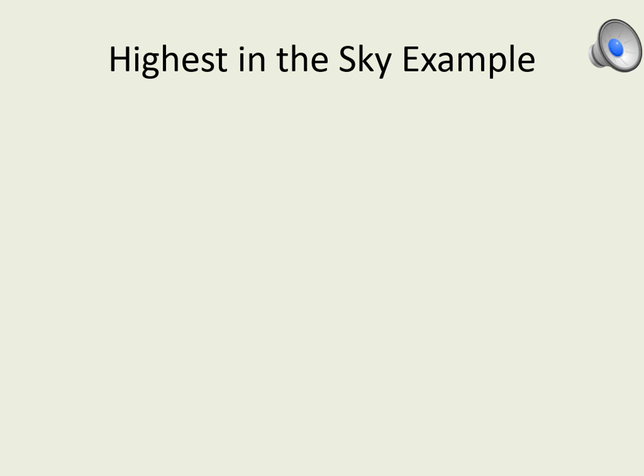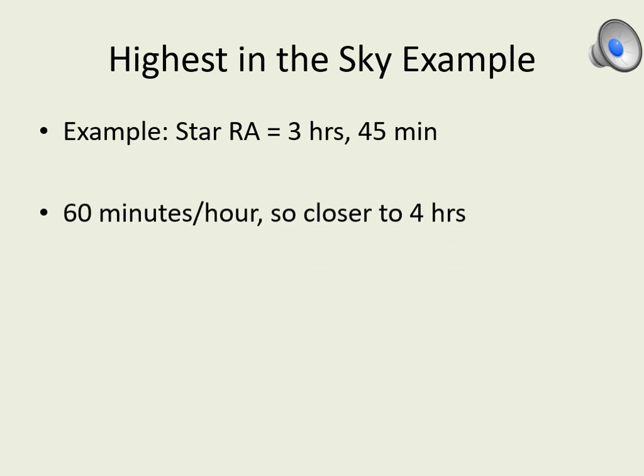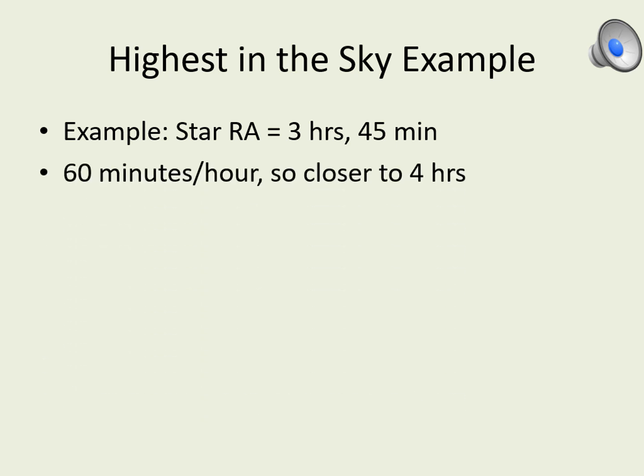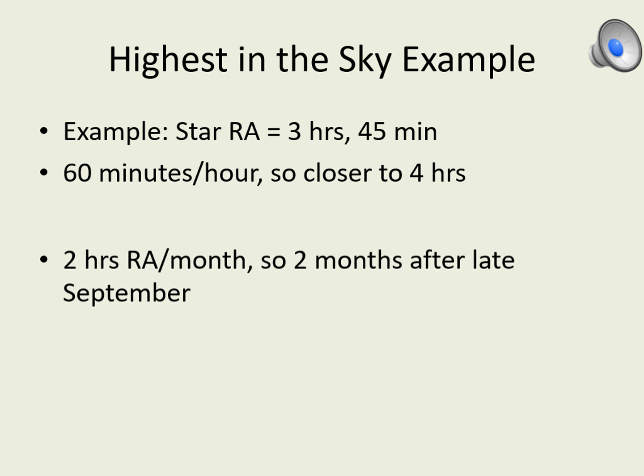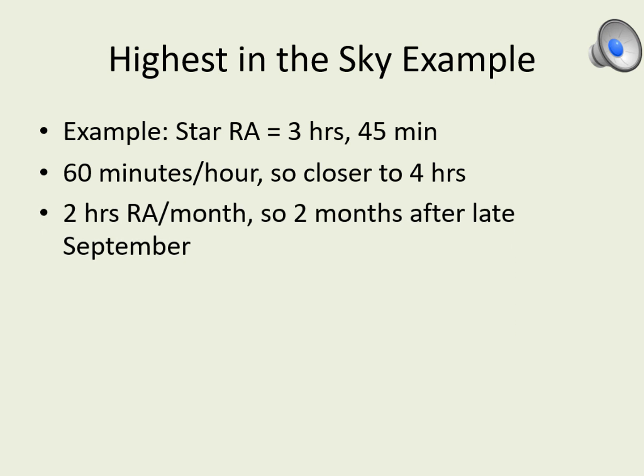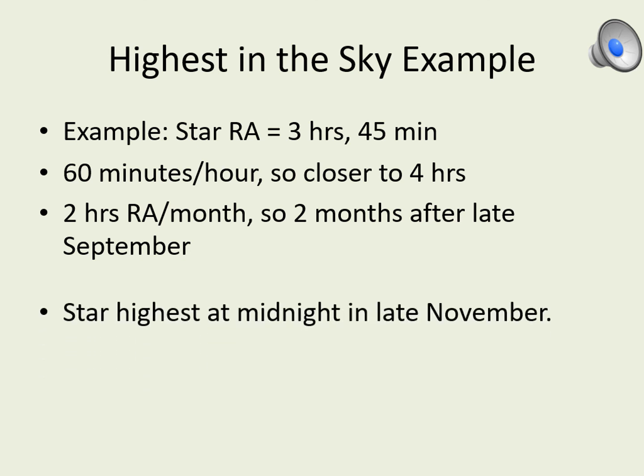Consider a star with a right ascension of 3 hours and 45 minutes. Here we should look at both the hours and the minutes — just like with time, each hour of right ascension is divided into 60 minutes. So a star at 3 hours and 45 minutes is really closer to 4 hours than it is to 3. Remember that the starting point is late September, and we advance 2 hours of right ascension each month. That means 4 hours of right ascension will be overhead at midnight two months after late September, or in late November.